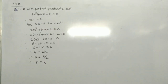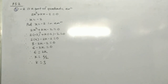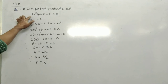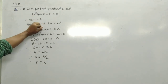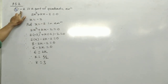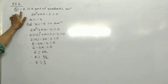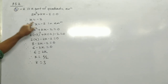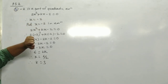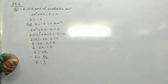Question 4: One of the roots of quadratic equation 2x² + kx - 2 = 0 is given. The root is x = -2. We substitute x = -2 into the equation to find the value of k.